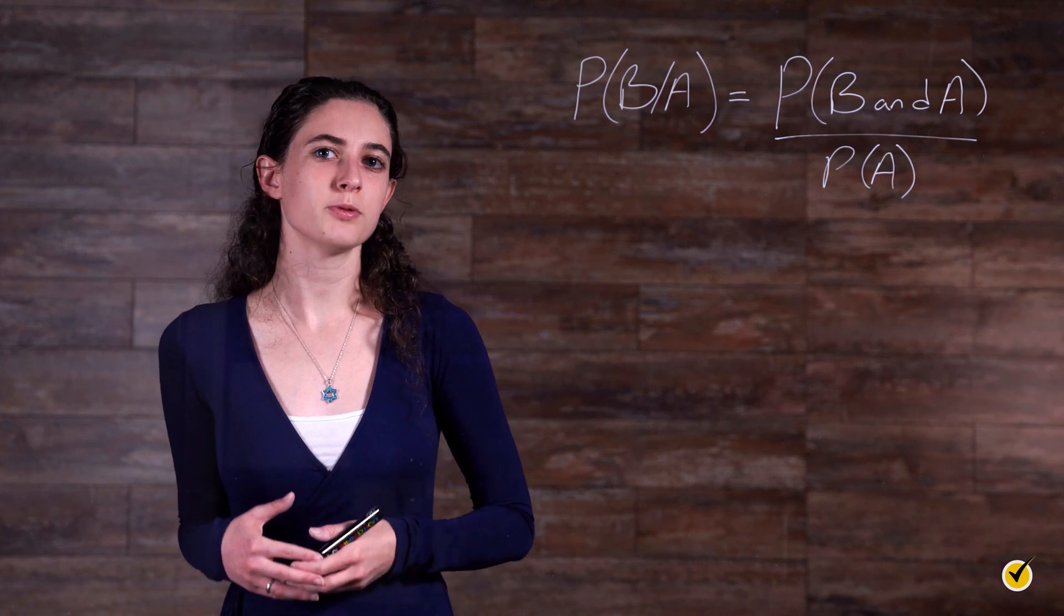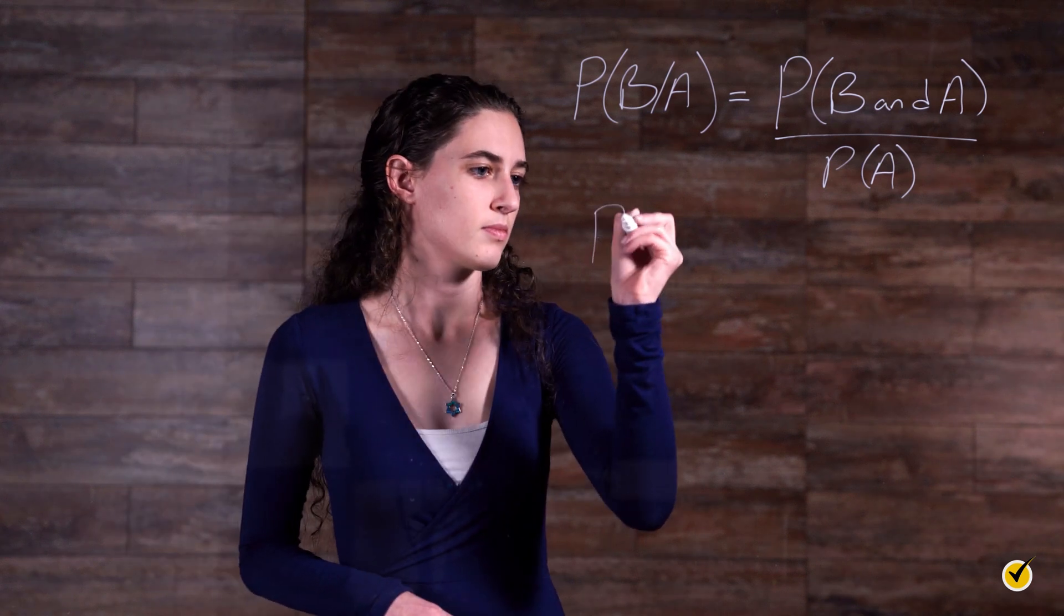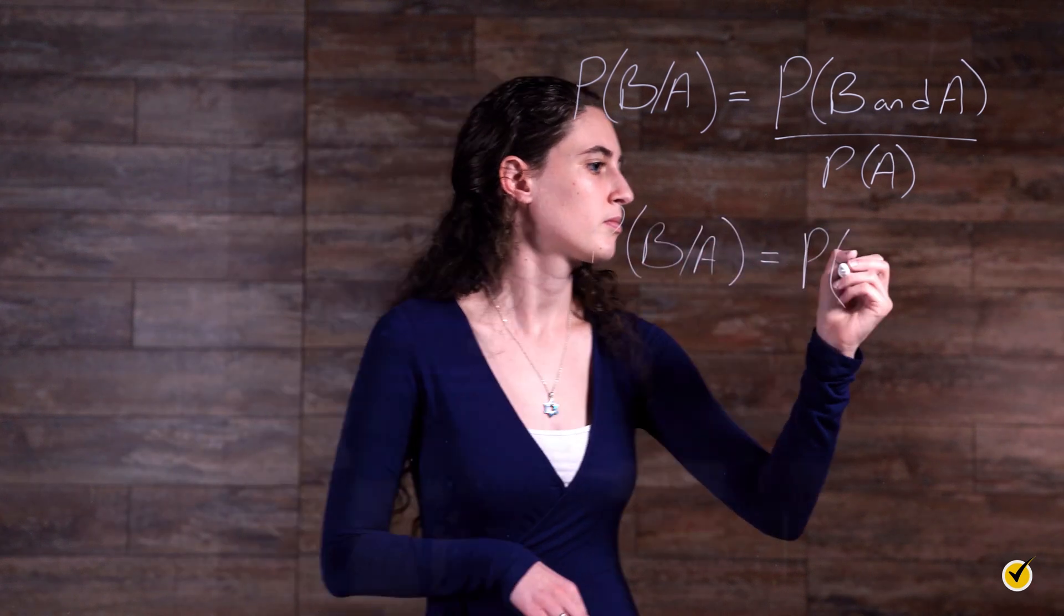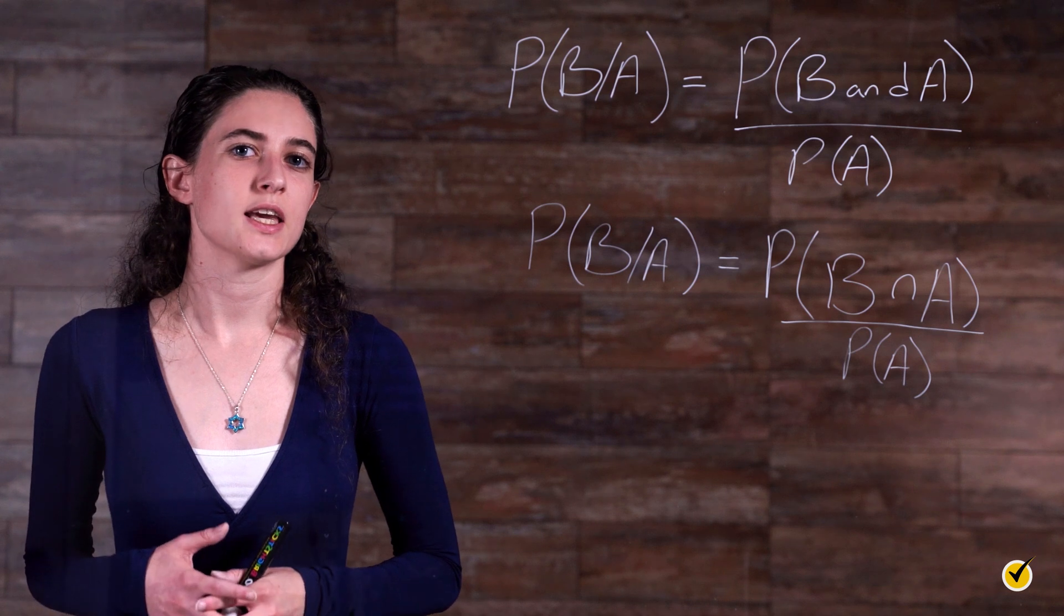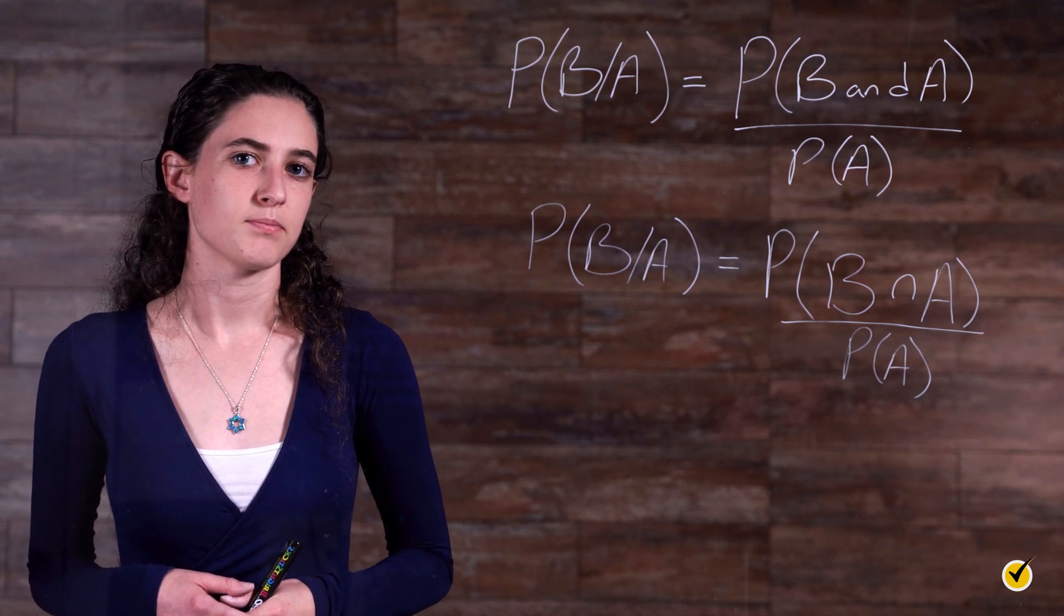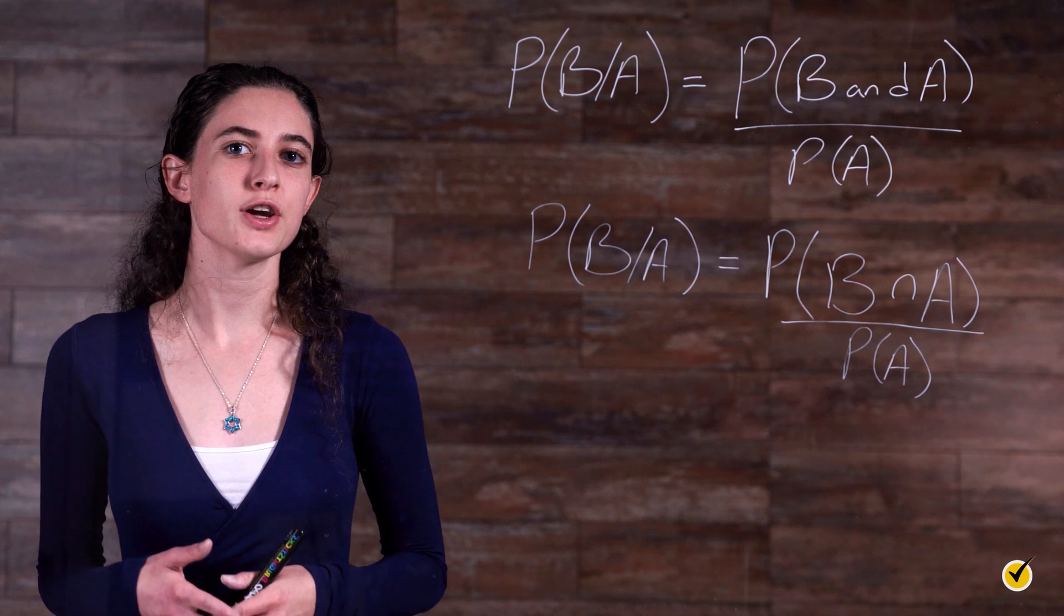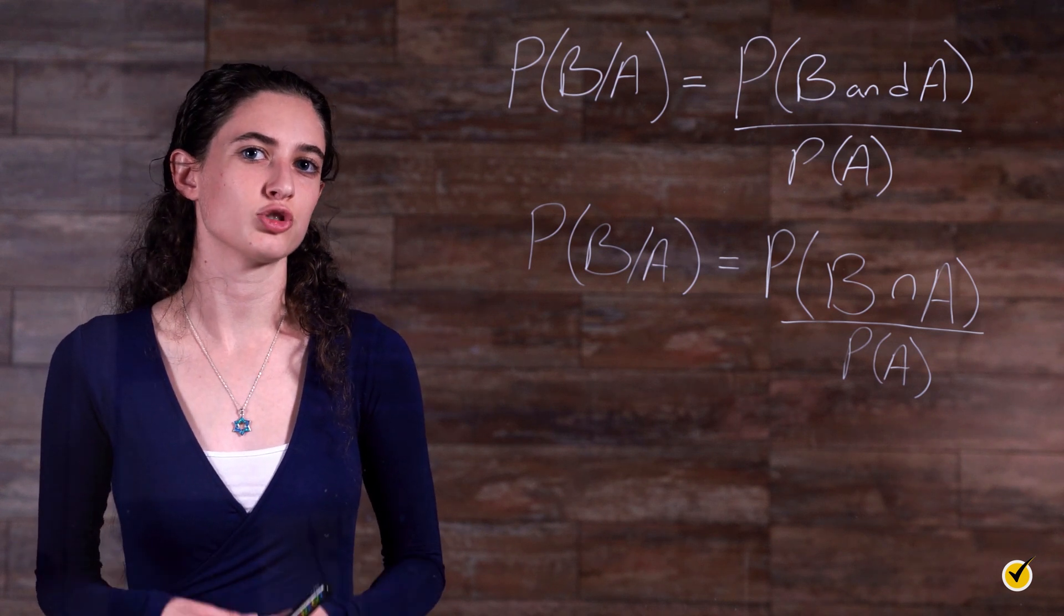Note that this formula can also be written as follows. The only difference is that the numerator is written as the intersection of event A and event B happening. In other words, the area where the two circles intersect in our drawing.